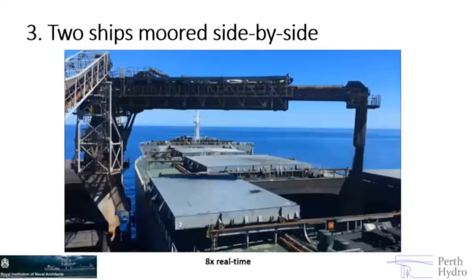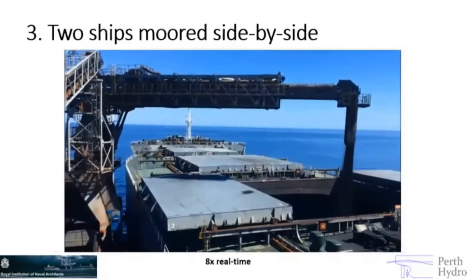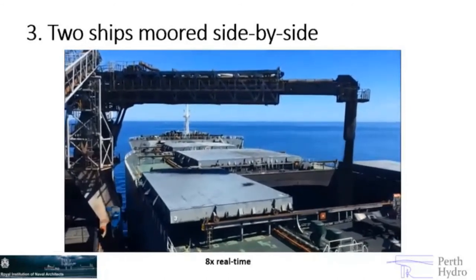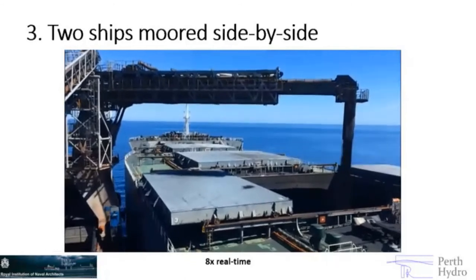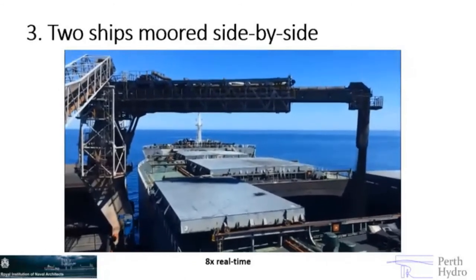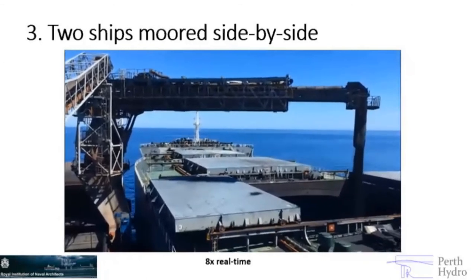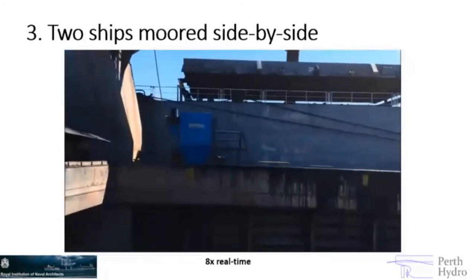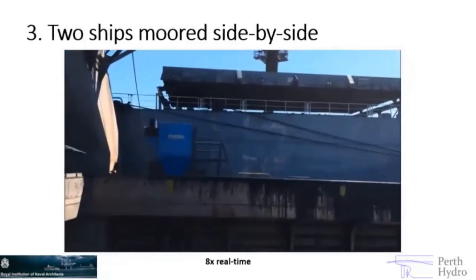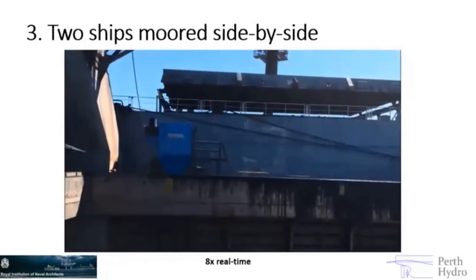Now let's move on to the topic of side-by-side ship motions. This example video shows an iron ore transshipment sped up eight times. You'll see the relative motion — the larger ship not moving much but the smaller ship moving a bit — and the resulting relative motions between the two. This is what we want to be able to predict.